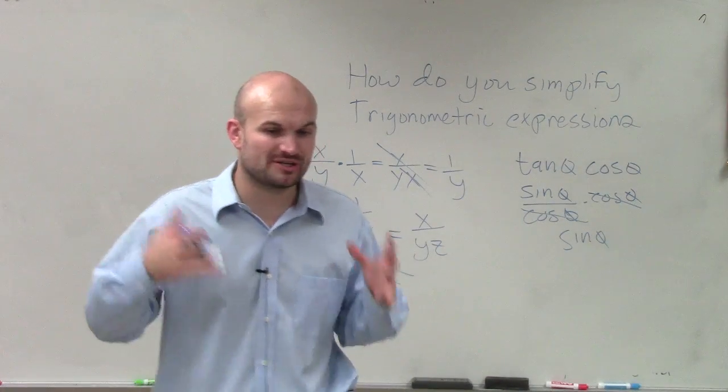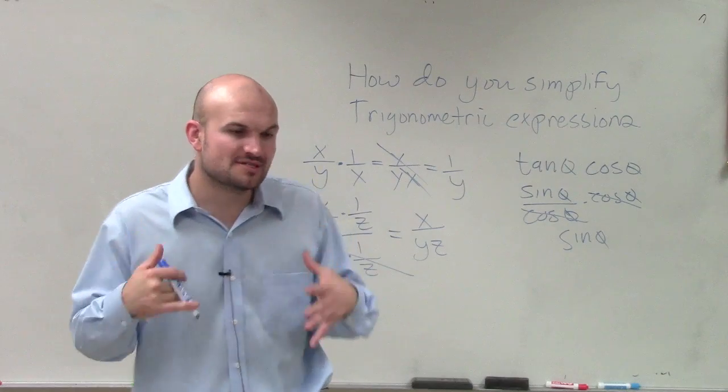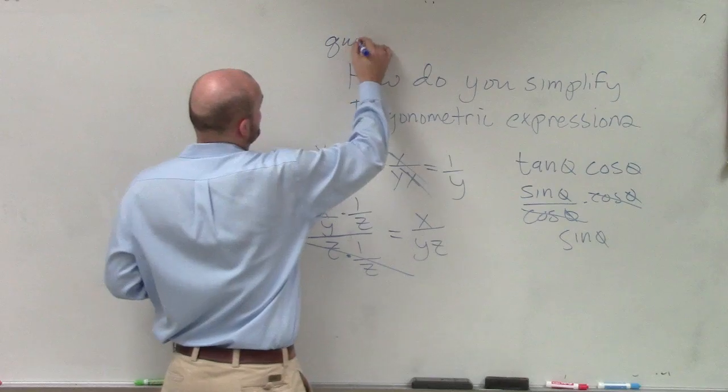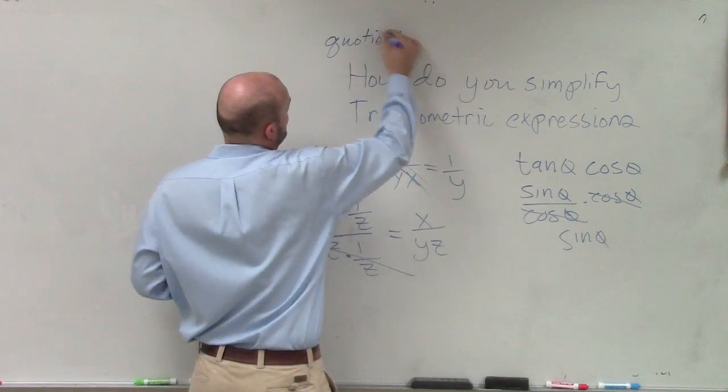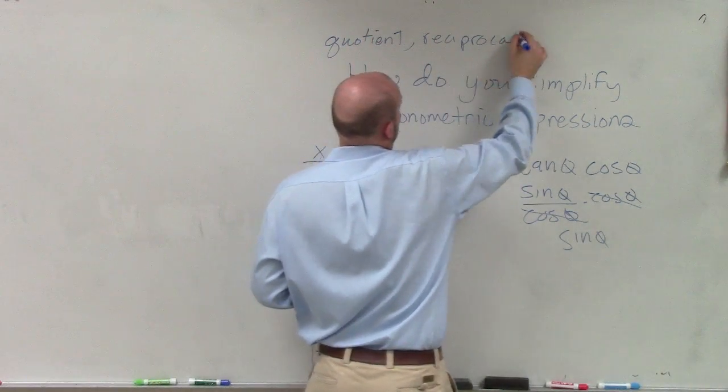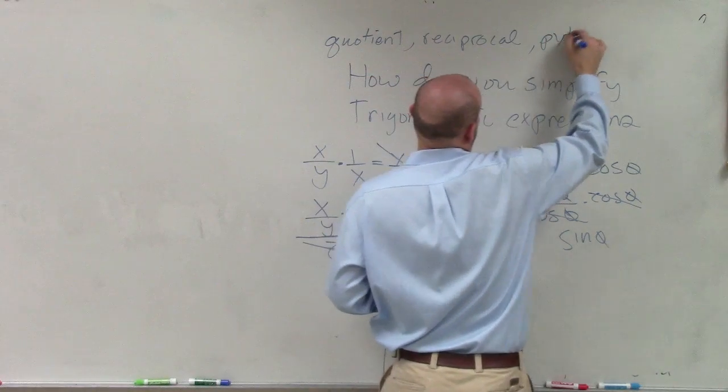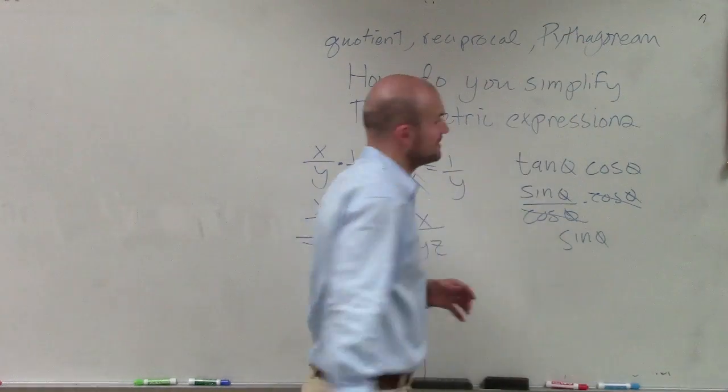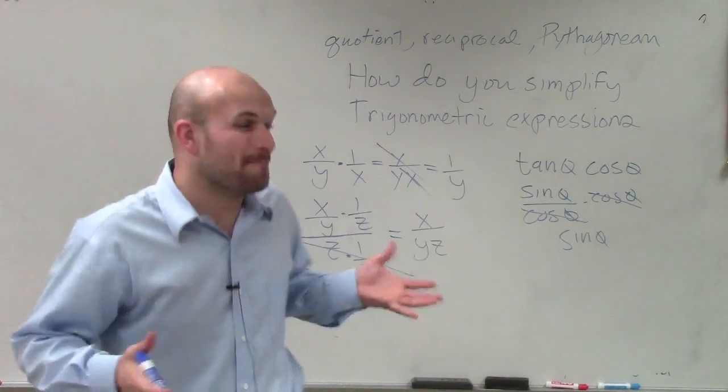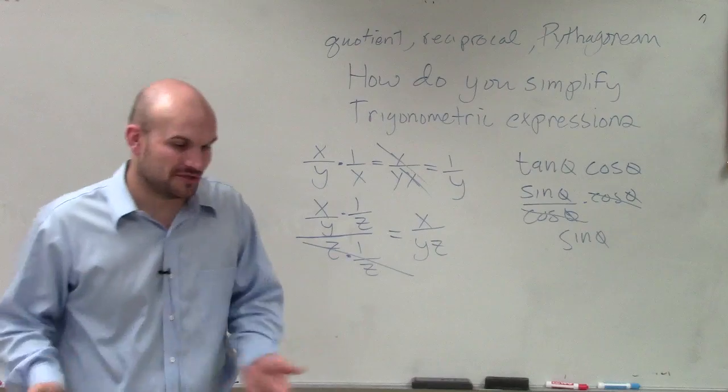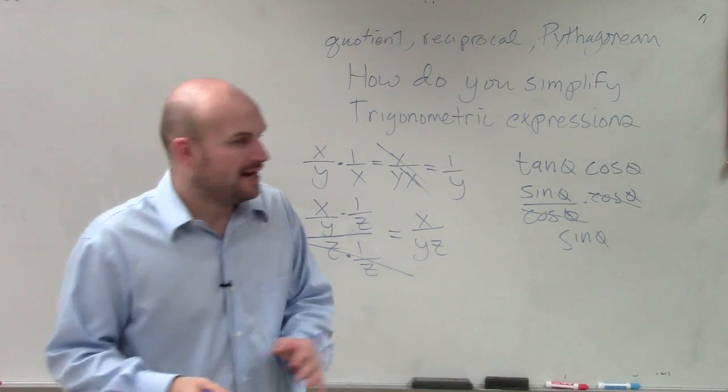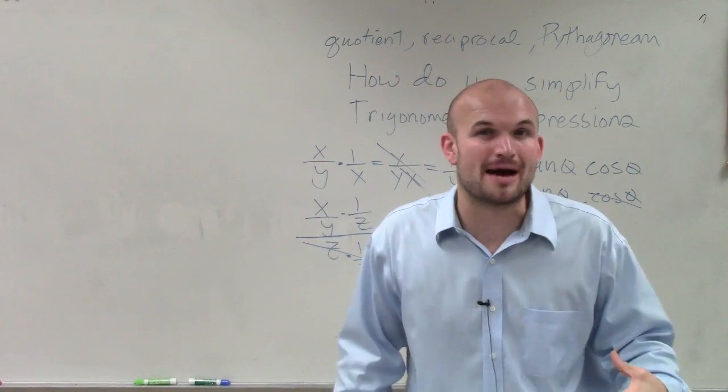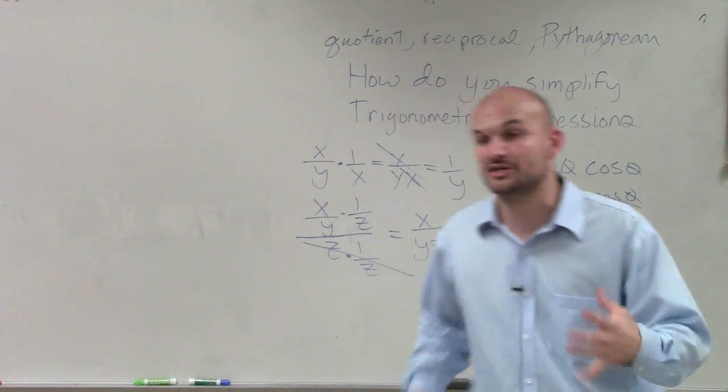So that's going to be very important when you're looking for these. You're always going to want to be using, think about the main ones that I would say is your quotient, reciprocal, or Pythagorean. Those are going to be your main identities that you're going to be using. You're going to use cofunction, you're going to use even and odd. But those are going to be your main functions that almost on every single problem you're going to want to apply and you're going to want to substitute.